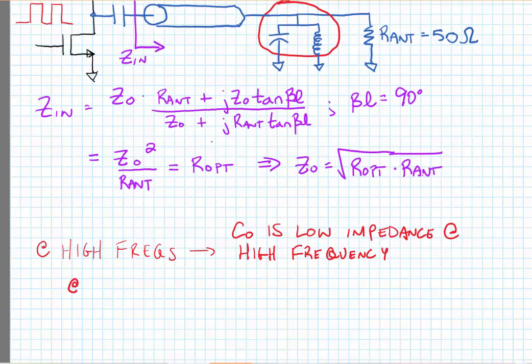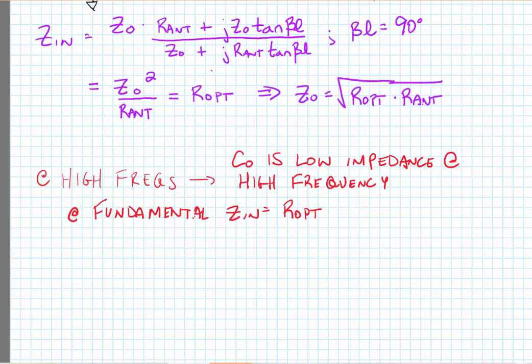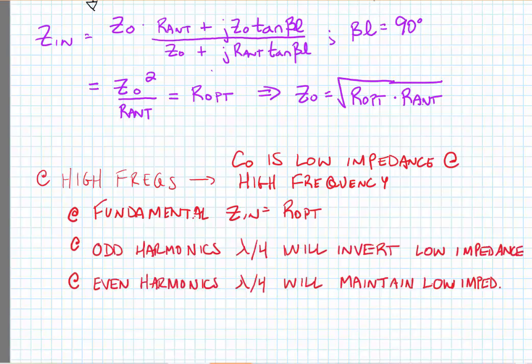So what we're going to see is that at odd harmonics, the short circuit from the capacitor is going to be inverted at the drain of the transistor, creating a high impedance. And at all even harmonics, the short circuit will be maintained because the wavelength of the transmission line will effectively be multiples of a half wavelength, and that will mean that we'll have a short circuit for all even harmonics.